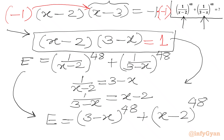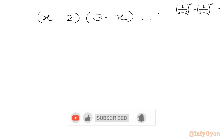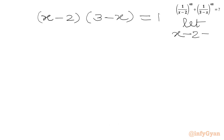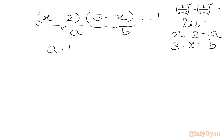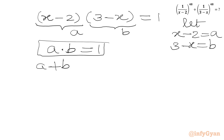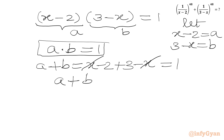We have (x minus 2)(3 minus x) equals 1, and our target is (3 minus x)⁴⁸ plus (x minus 2)⁴⁸. Let us substitute a equals x minus 2 and b equals 3 minus x. Then our first equation is a times b equals 1. Adding a and b: (x minus 2) plus (3 minus x) equals 1, so a plus b equals 1. These are our two key equations.